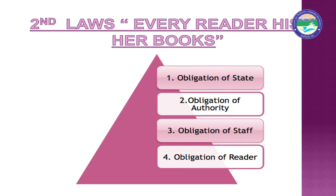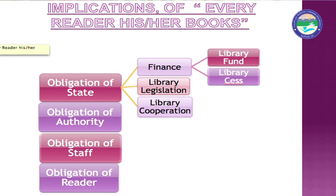The second law is: Every reader his or her book — meaning every reader should be able to get their desired book. It is not necessary that the user be a library member. There are four obligations: obligation of state, obligation of authority, obligation of staff, and obligation of readers. Obligation of state is divided into finance, library legislation, and library cooperation.